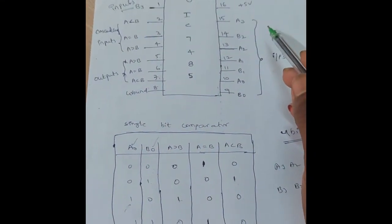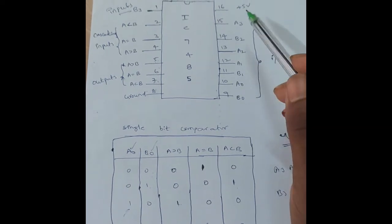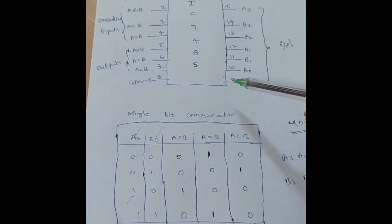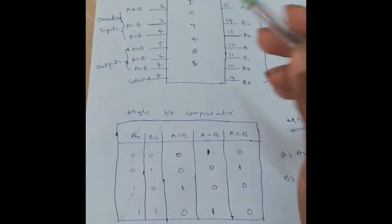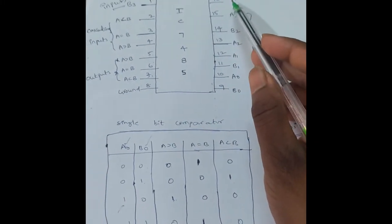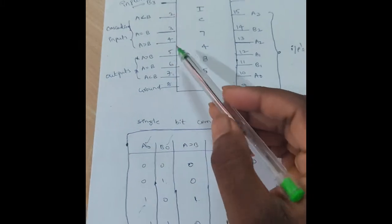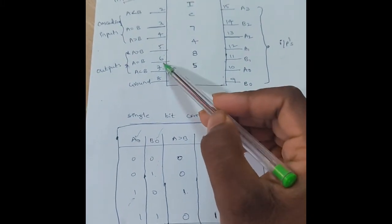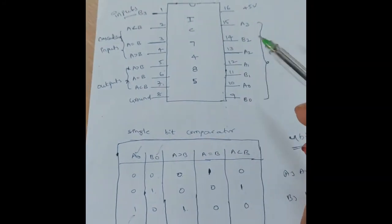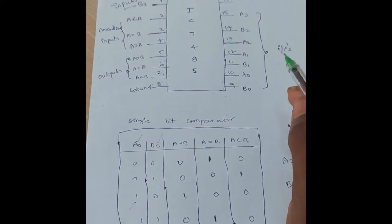Today's experiment is the digital comparator. The IC number is 7485. This is the pin diagram of IC 7485 — it has a total of 16 pins. The 8th pin is ground and the 16th pin is the supply pin. B0 to B3 are the inputs, and pin numbers 5, 6, and 7 are the three outputs. The comparator is used to compare the magnitude of two numbers.